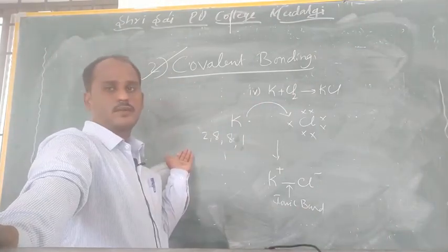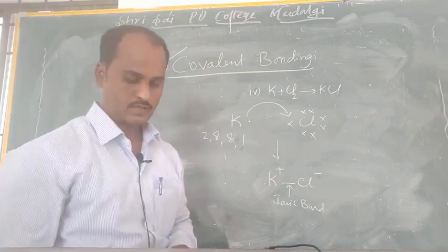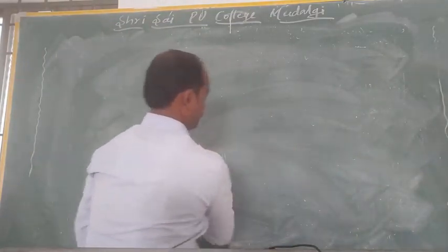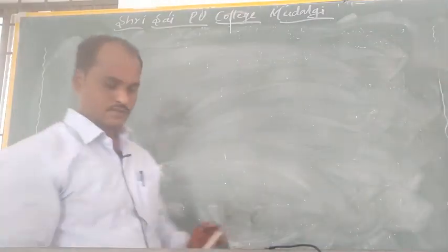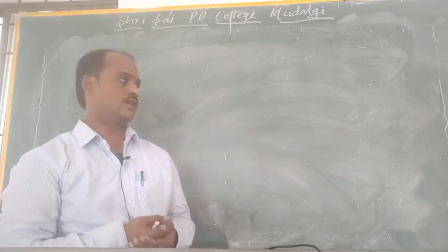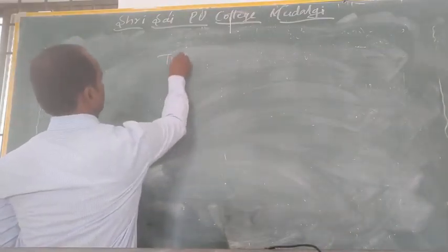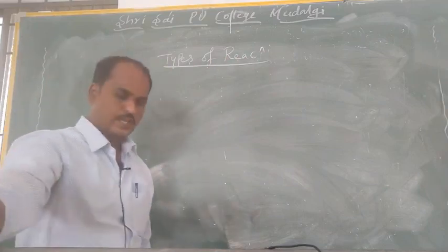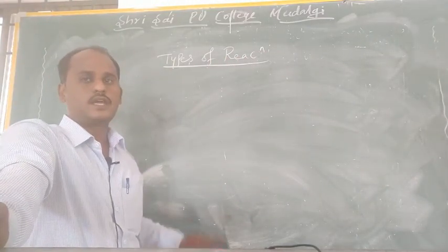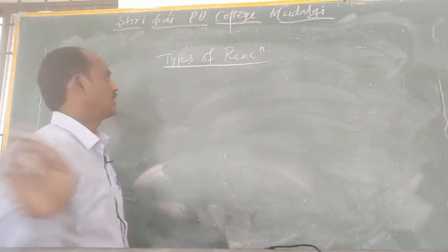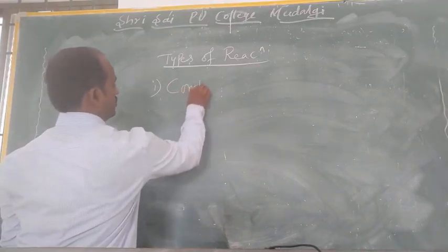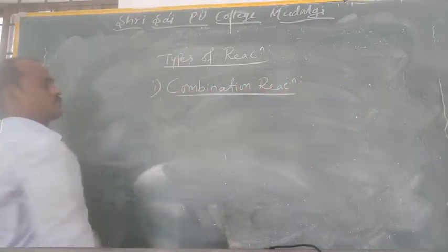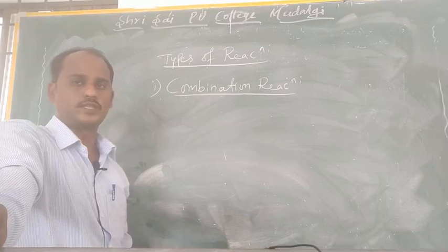Whereas the different examples of carbon compounds show covalent bonding formation. Now we move to the next concept — different types of reactions.